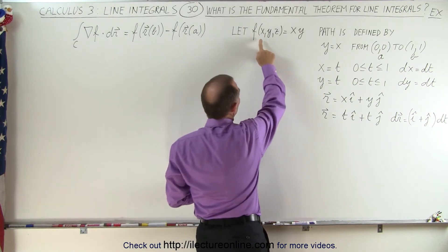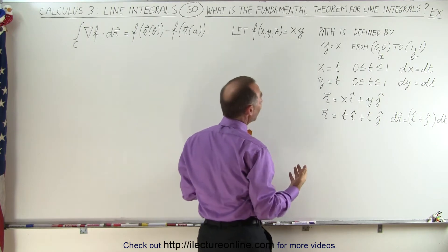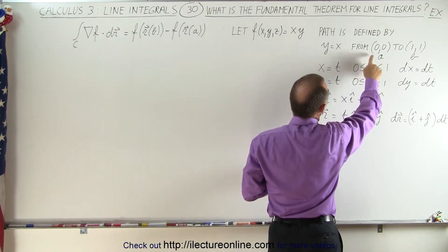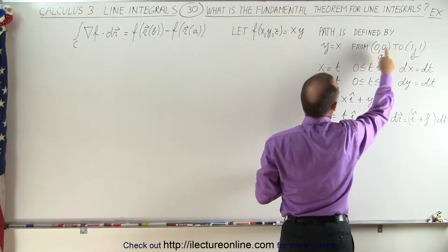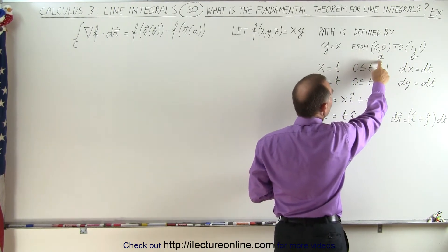Let's say that f in terms of x, y, and z is equal to the product of x times y and the path over which we're going to integrate is going to go from the point (0,0) to the point (1,1) via the line function y equals x. So this is our a and this is our b.